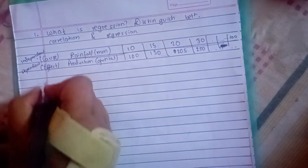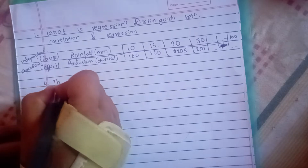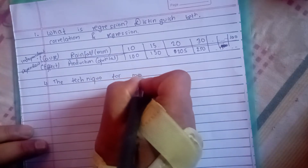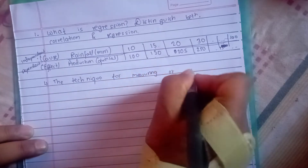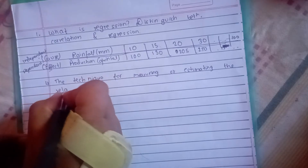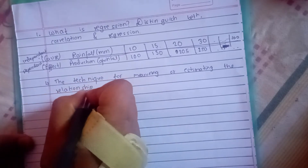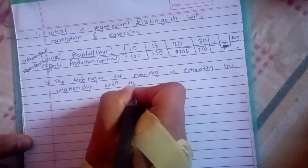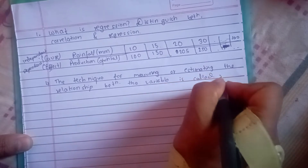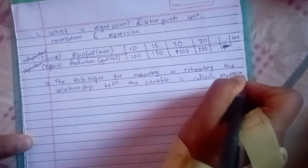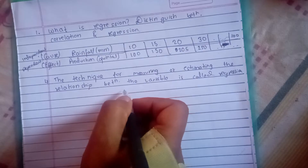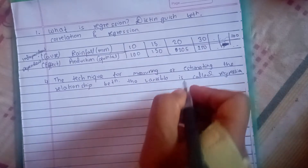The technique for measuring or estimating the relationship between variables is called regression. This technique helps us to know the relationship between the variables.